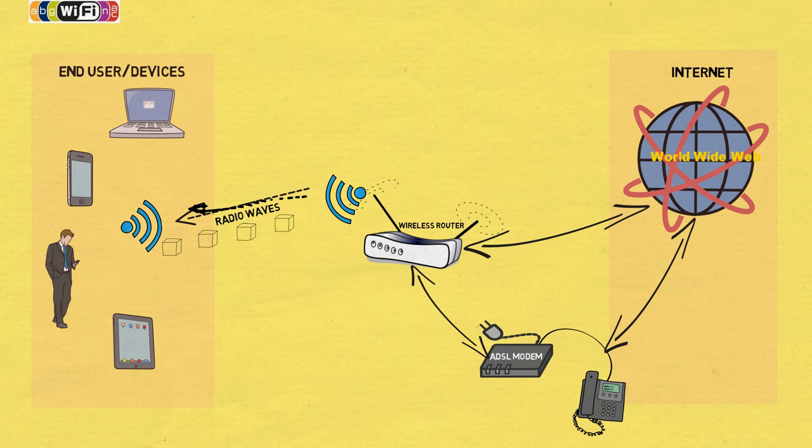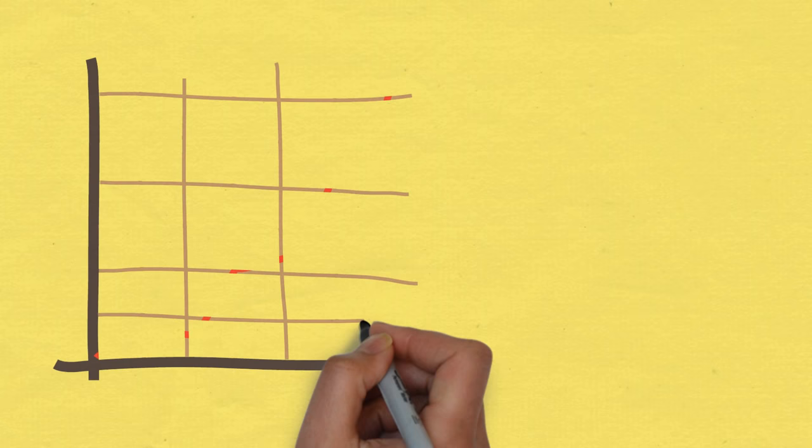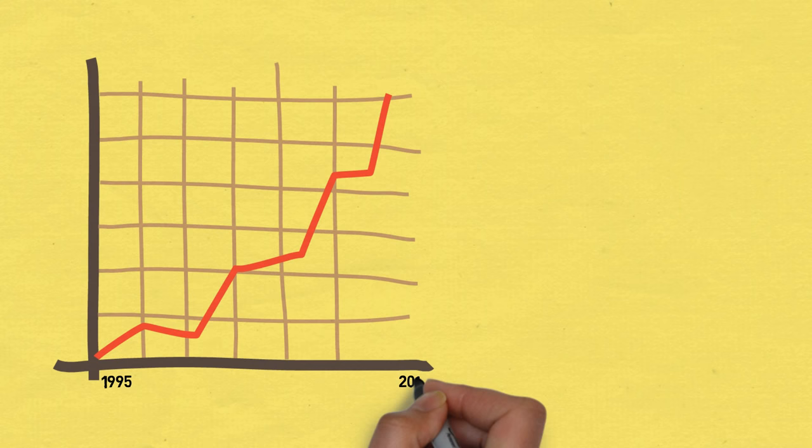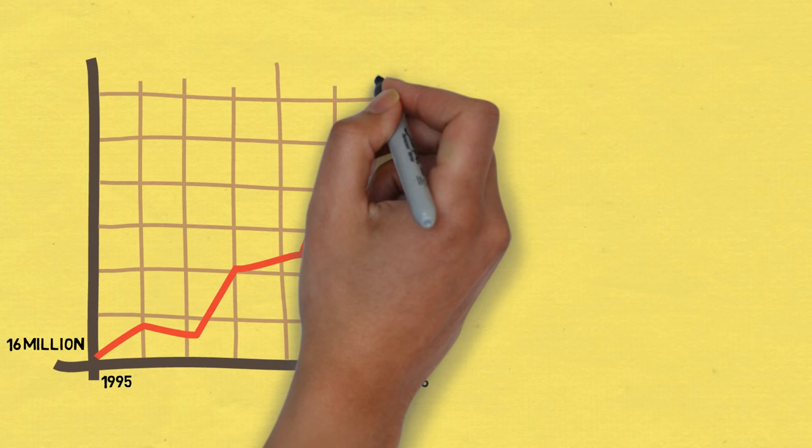The same process happens in reverse. With the astounding increase in internet traffic, we have seen amazing growth in the bandwidth and speed available to end-users. From 1995 to the end of 2016, internet users grew from 16 million to more than 3,675 million. Now that's serious growth.